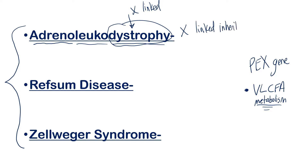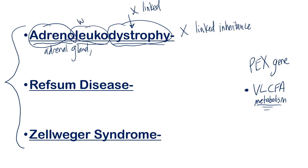Now to know the symptoms, let's just break down the word. Adreno — we're going to have an issue with the adrenal gland. This disorder involves a buildup of VLCFA, very long chain fatty acids, in specific parts of the body. You're going to have a buildup in the adrenal glands, which could cause adrenal gland malfunction. You're going to have a buildup in the white matter of the brain — leuko, think leukocyte, which means white. And then there's also a buildup in the testes.